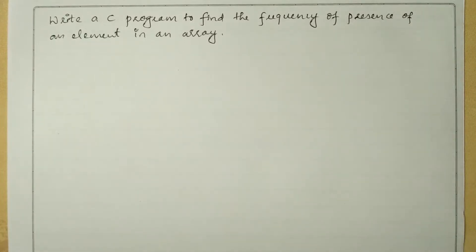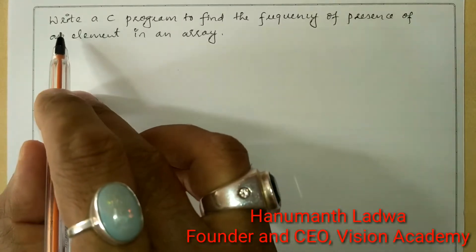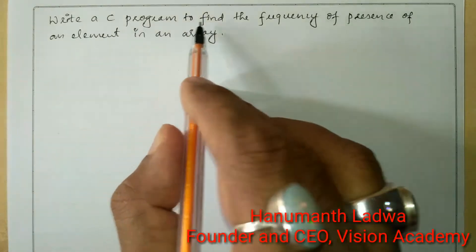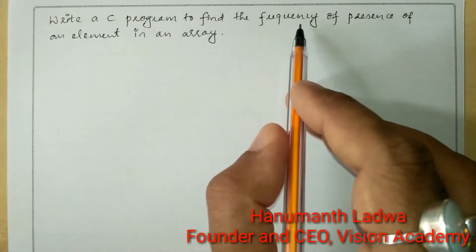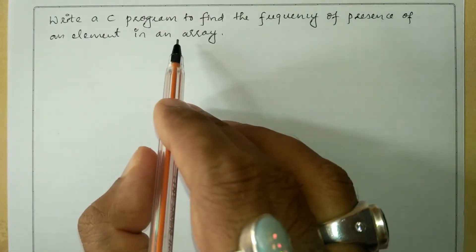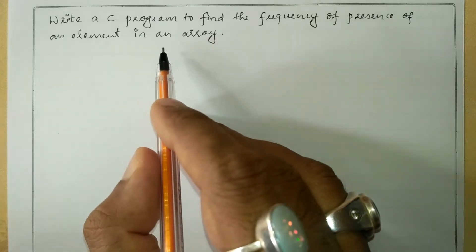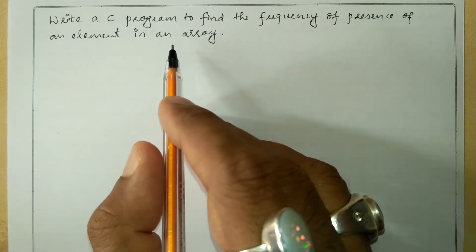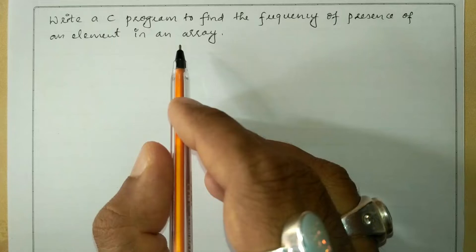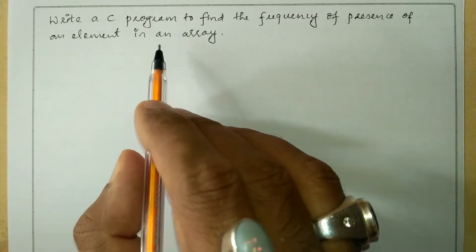Hello and welcome to Vision Academy. My name is Hanumanth Latwa and in this video we are going to write a C program to find the frequency of presence of an element in an array. Here frequency means how many times the particular number has repeated in the given array.